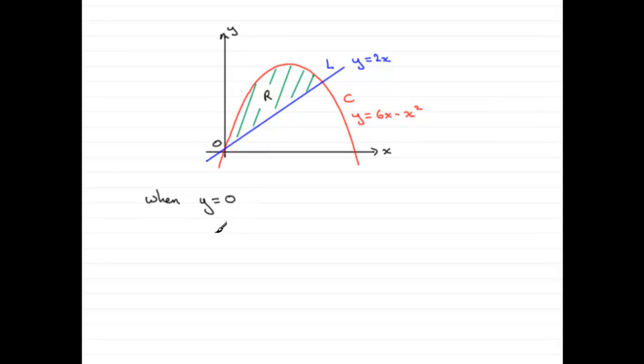So I'm going to start off by saying when y equals 0, then we would have 6x minus x squared, which is the equation for C, equaling 0.